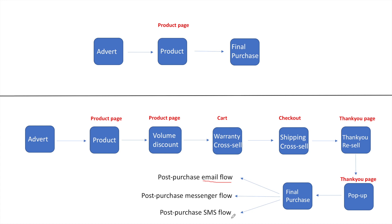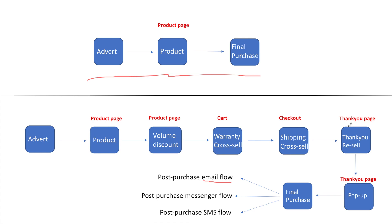Overall, even in a bad case scenario where the customer only takes one of these extra offers, that can easily add $10 of clean profit to the order — meaning you can spend $10 more to acquire the customer, or simply keep it as extra profit. Without this funnel, you need extremely high click-through rates to be profitable on the front end. All these steps are fully automated once set up, applied to every product you test going forward.